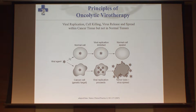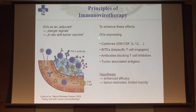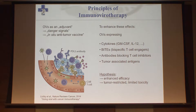In the real world it's more complicated. We believe viruses can act as an adjuvant and as an in-situ anti-tumor vaccine, producing danger signals in the tumor microenvironment. We have worked to enhance all of these effects by engineering oncolytic viruses expressing different compounds like cytokines, BiTEs, checkpoint blockade antibodies, or tumor-associated antigens. The hypothesis is that we can enhance the efficacy of the oncolytic agent, with tumor-restricted expression potentially limiting toxicity.